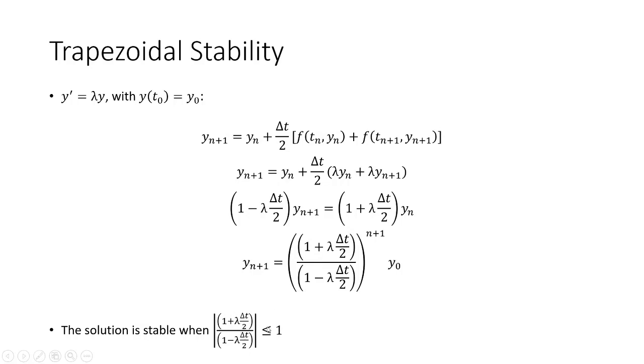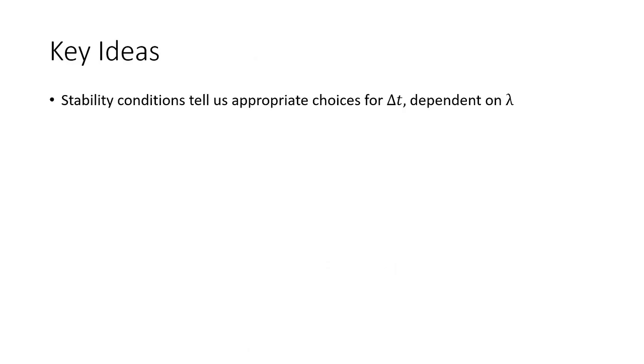Again, the point of all these stability conditions is they give us appropriate choices for delta T depending on our lambda. So we'll be given a simple ODE, maybe Y prime equals 4Y. We can plug that lambda into our stability conditions, solve for an appropriate delta T. Or we can see what our critical delta T is between a stable solution and an unstable solution. So when we're doing this in MATLAB, we'll know what our time step needs to be.